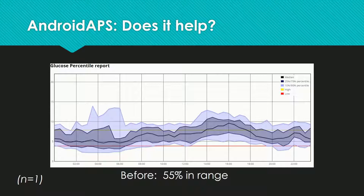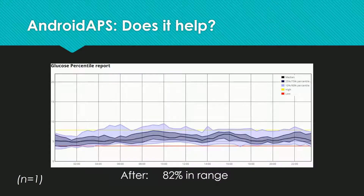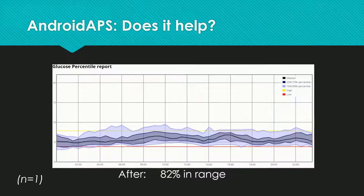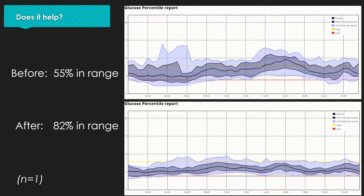This is a small case study of a young woman who donated data from before and after starting with Android APS. During the night, the 25th percentile was below 4 mmol/L (72 mg/dL) — hypoglycemia at least every fourth night — and still having high values at other nights. With Android APS, you can see a much narrower ribbon indicating less fluctuation. Especially during the night, the low values have become far less without any more high values. Comparing the two, her time in range increased from 55% to 82%, within a rather narrow range of 4–8 mmol/L (72–144 mg/dL).